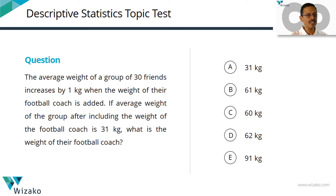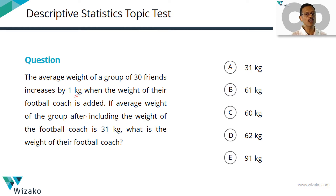We'll use a standard framework to solve this question, which can be used for most questions in averages. The average weight of a group of 30 friends increases by 1 kg when the weight of the football coach is included. So without the coach, their average weight is something, and with the football coach added, it increases by 1.